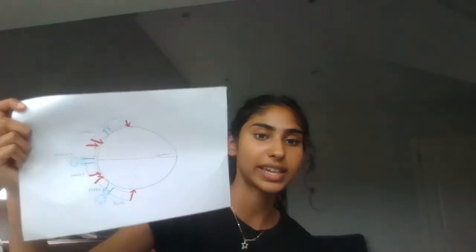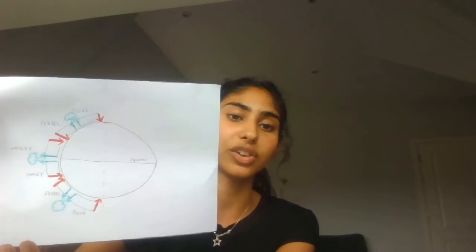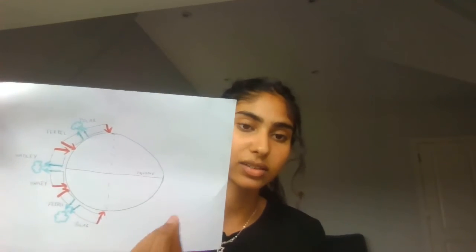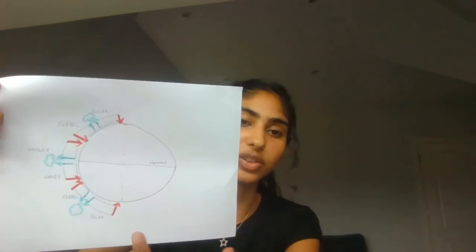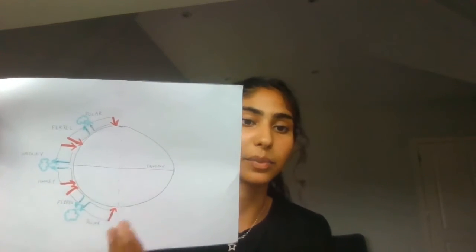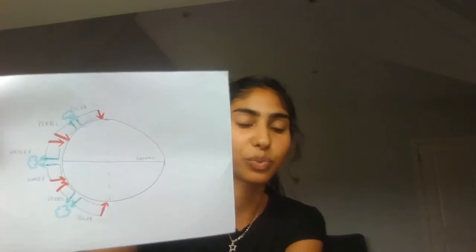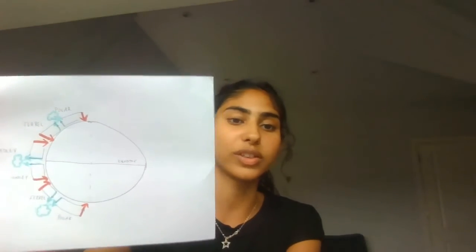So that was circulation cells. What you need to know is that there are three different cells and you need to know their names. You need to know the types of climate that arise where the cells converge and sink — where it's high pressure, it's arid. And you need to know the types of climate when the air is rising — that's low pressure, it's rainy, wet, tropical, with rainforests and all of those things.